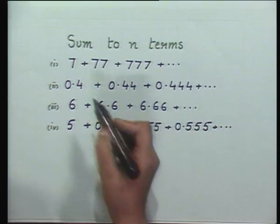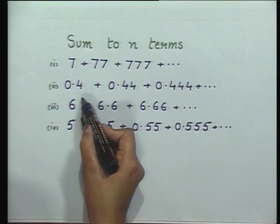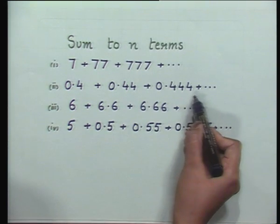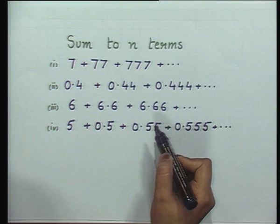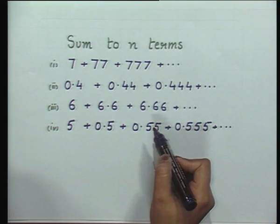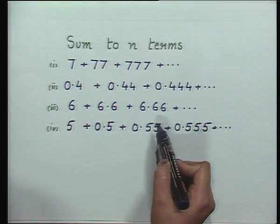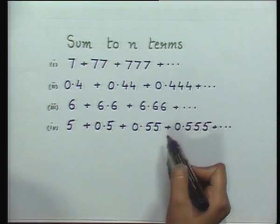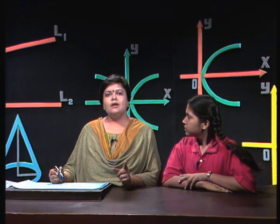Let us see what those special series are. You have the series 7 + 77 + 777 and so on, and we will find their sum to n terms. Similarly, you have 0.4 + 0.44 + 0.444 and so on, and 6 + 6.6 + 6.66 and so on. You can see there is a certain pattern, but these series are definitely not geometric progressions. Shipra, the next term in the first series would be 7 written 4 times. To find their sum, we will use a special technique.